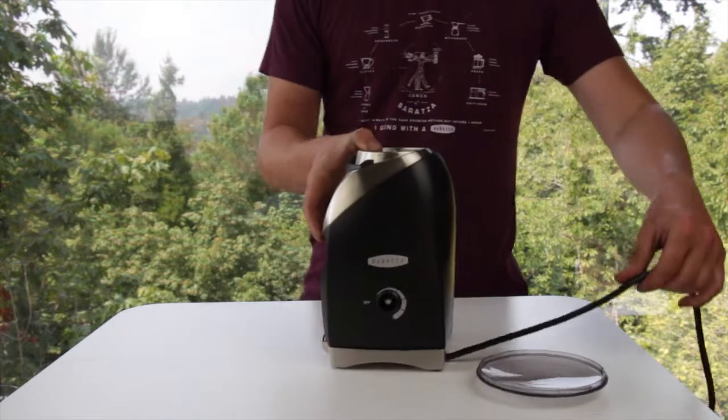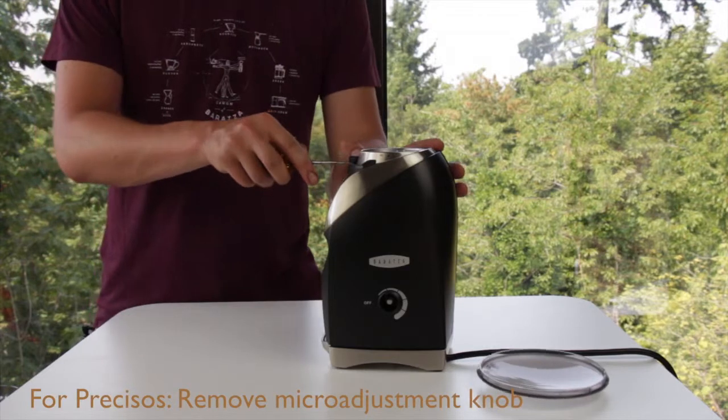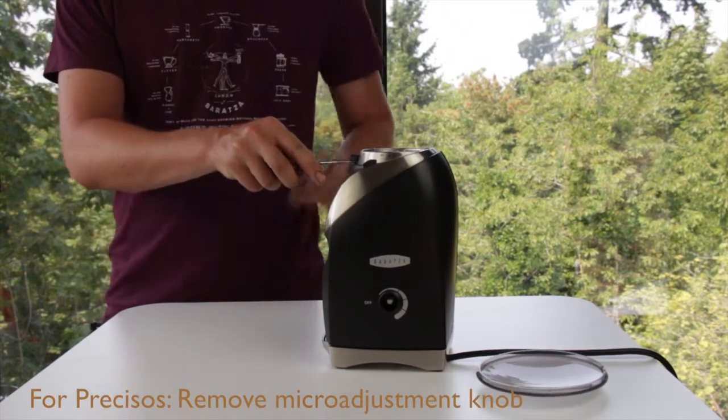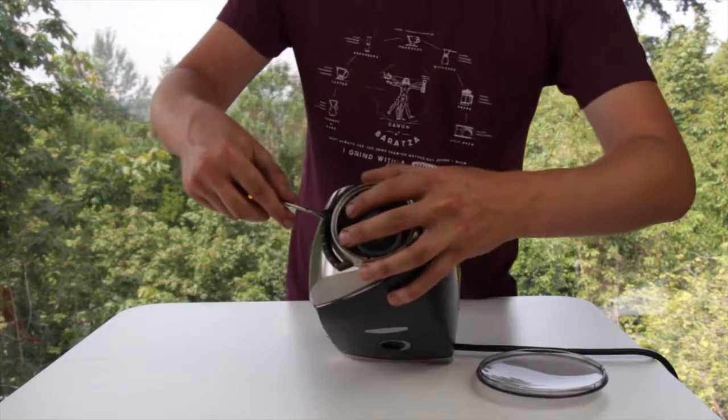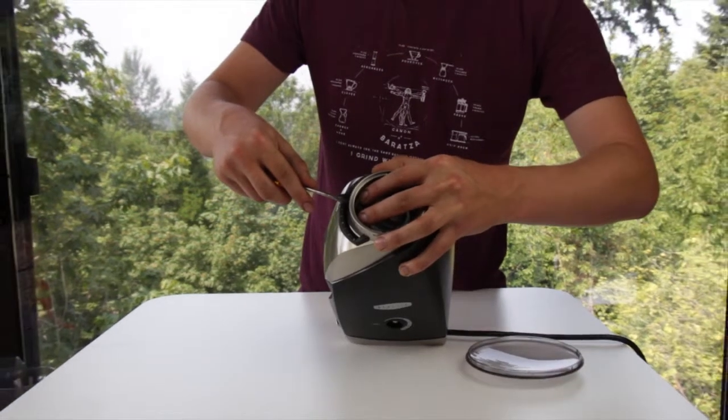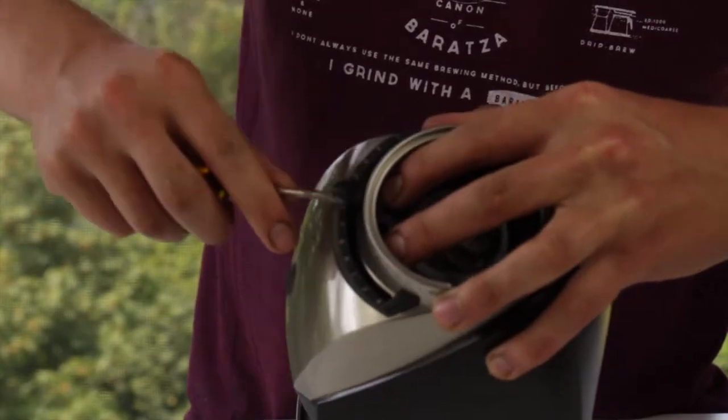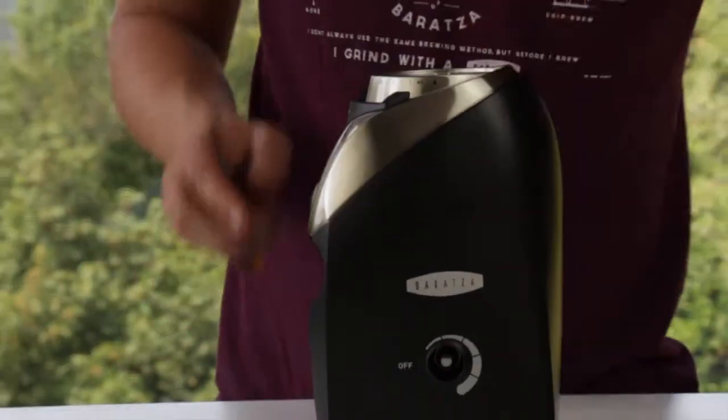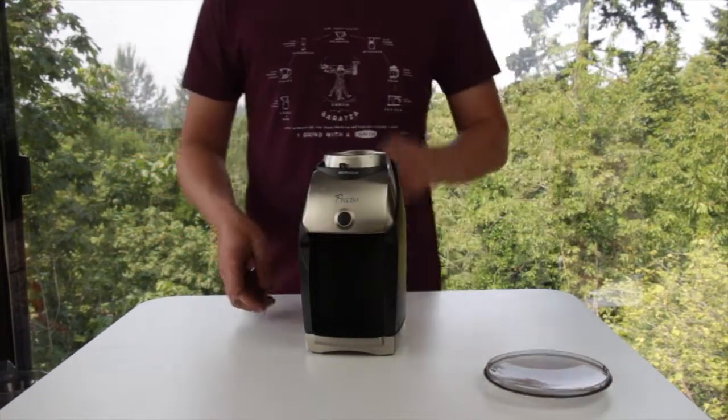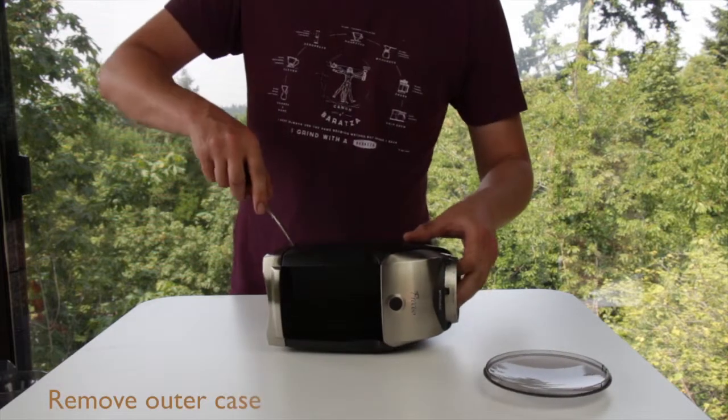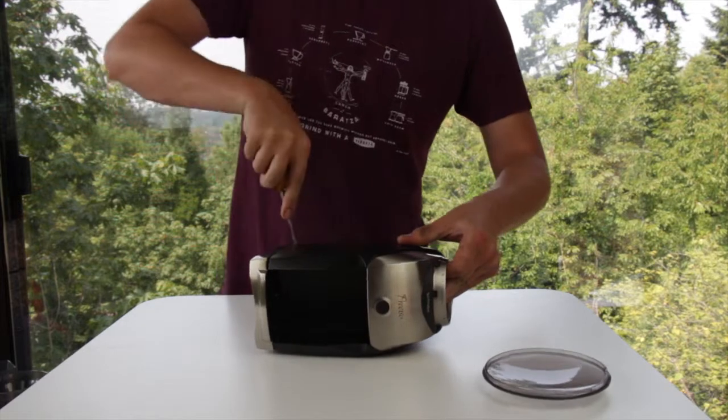Next we're going to want to remove the case. For the Preciso case, we're going to get off the micro adjustment knob first. Place a flat head screwdriver underneath the knob. Inside the grinder, push down on the black adjustment ring to steady it, and while you're pushing down gently, you can go ahead and pry the knob off with your screwdriver. Once the knob has been removed, we can lay the grinder on its side and get the case off. If you need some more help getting your case off, please watch our YouTube video for case removal.